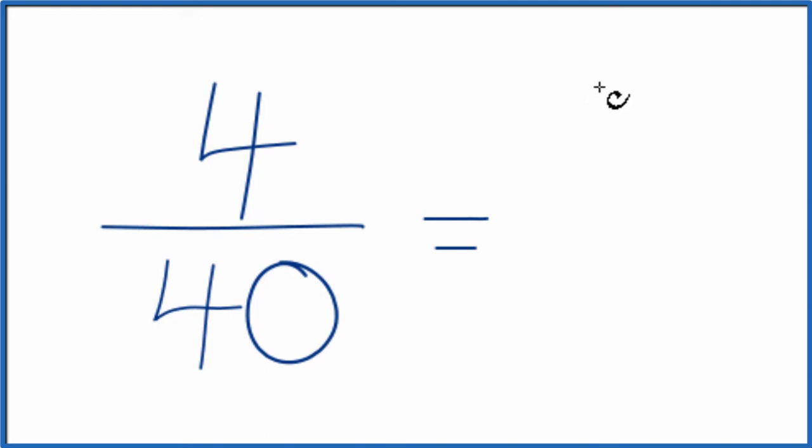4 divided by 4, that's just 1. 40 divided by 4, that's 10, because 10 times 4 gives us 40. So we've reduced the fraction 4 fortieths down to 1 tenth.